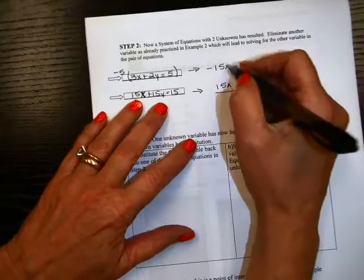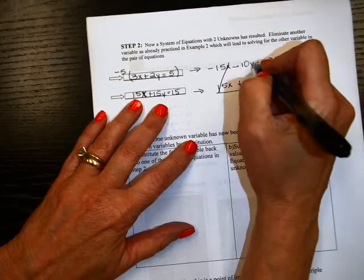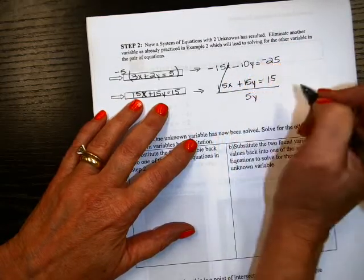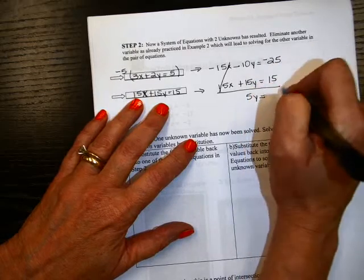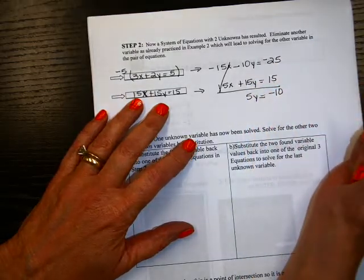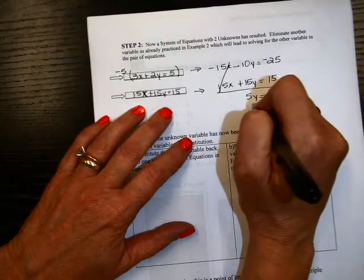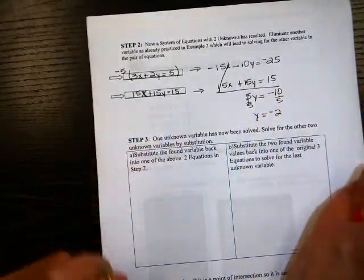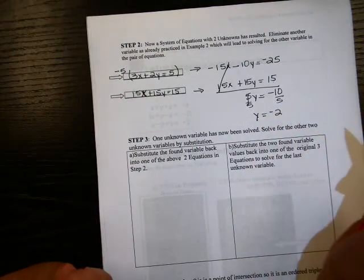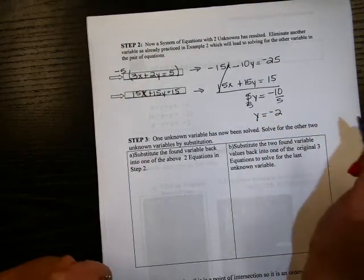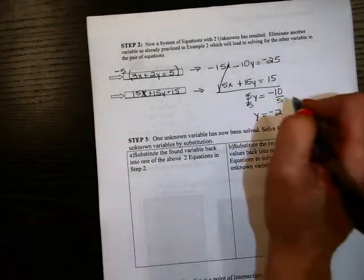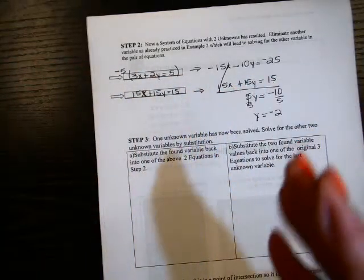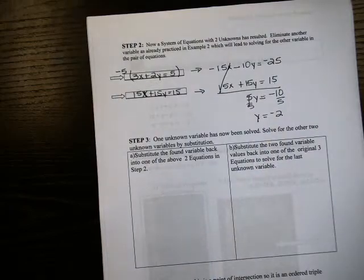So that's going to give me negative 15x. And then the negative 5 times the 2 is negative 10y. Equals the negative 5 times the 5 is negative 25. And that way I can keep this one the same. And I can add these together. A negative 10 and 15 would be a positive 5y. A negative 25 and 15 is a negative 10. Divide both sides by 5. So y is negative 2.